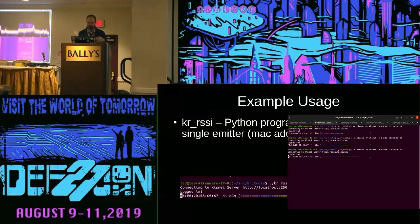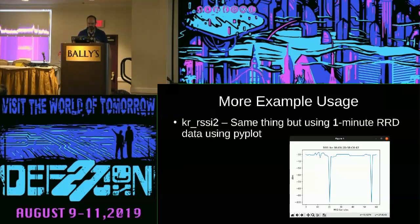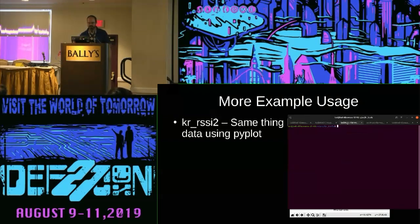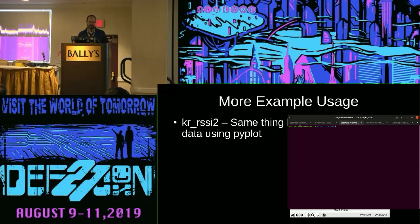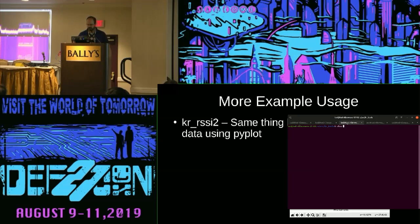It's just pulling the REST API at one hertz using the device endpoint. A slightly more sophisticated version does the same thing, but instead of using a scalar field — which just gives you the instantaneous last signal strength for the MAC address — it uses the round-robin database that gives you 60 seconds worth of data at one-second intervals.